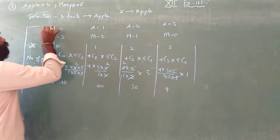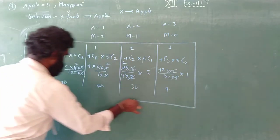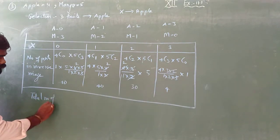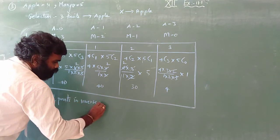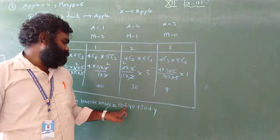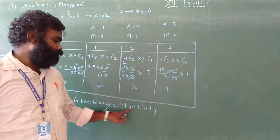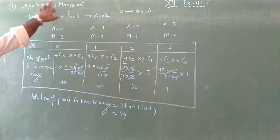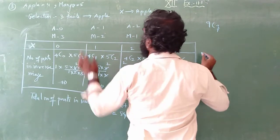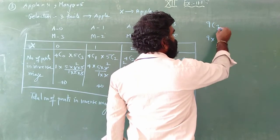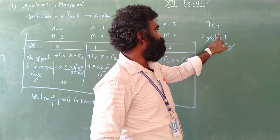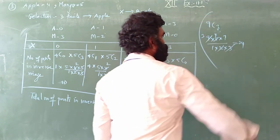Now I need to find the total number of points in the inverse image. Total = 10 + 40 + 30 + 4 = 84. If you want to check: total fruits = 9, so 9C3 = (9×8×7)/(1×2×3) = 84. You have got the answer — 84.